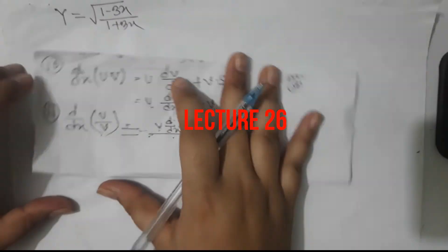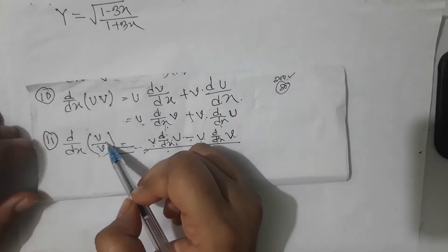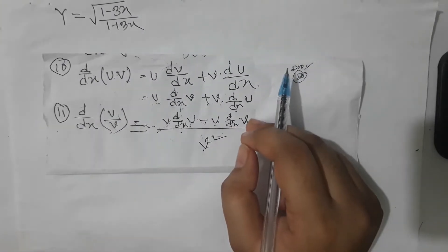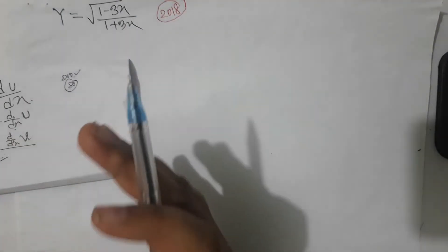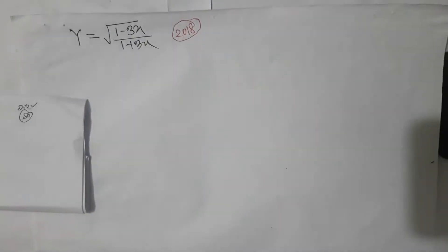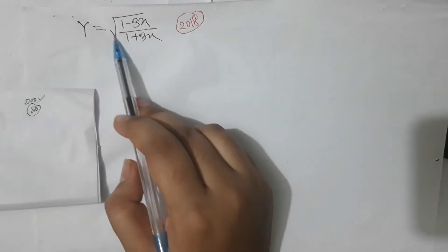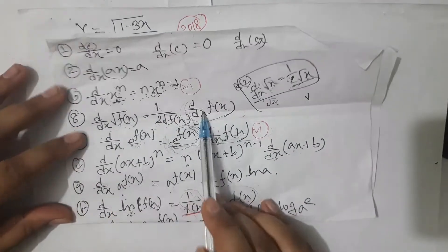આરારસ્ મોલિગોણીતેર આમરા પ્રથમ ભાગ — today we look at some integral calculus. સાલફ કરગો, there is a place where you are running. That's how you are running, and how do you run? Let's solve this problem.